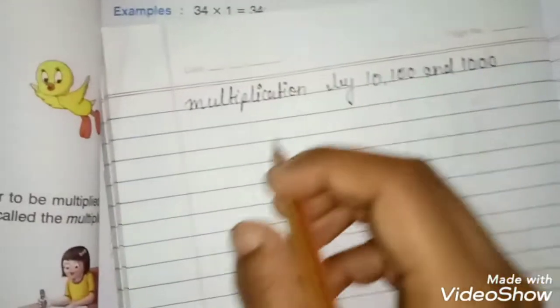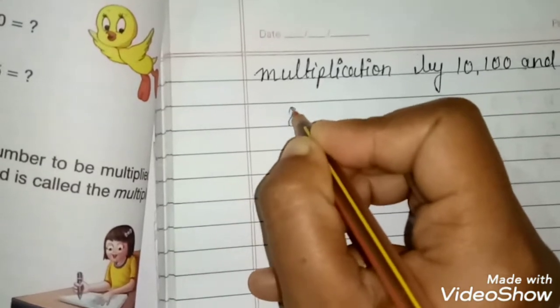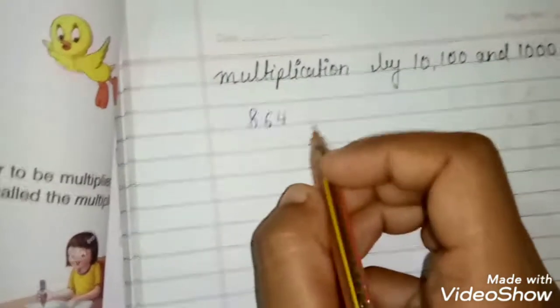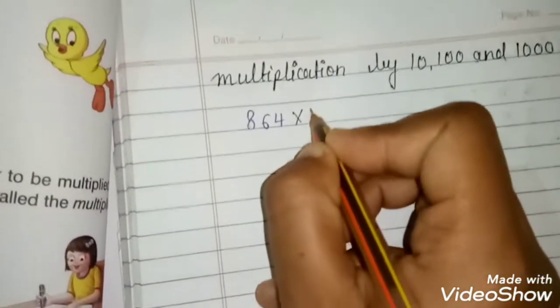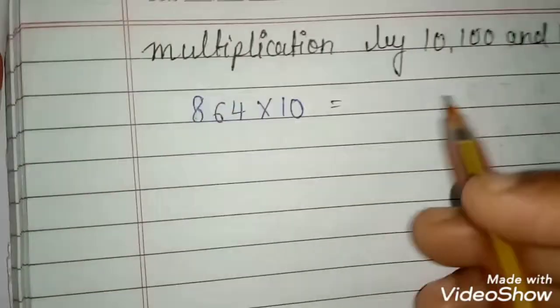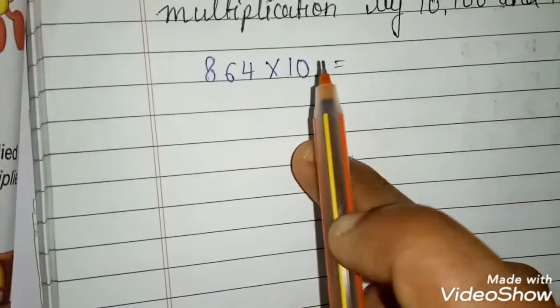We will see one example. 864 into 10. First you have to count the number of zeros here. Here number of zeros is 1.